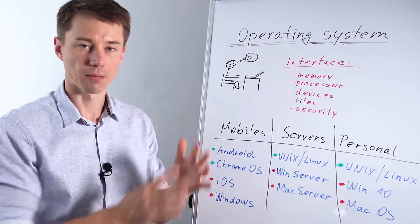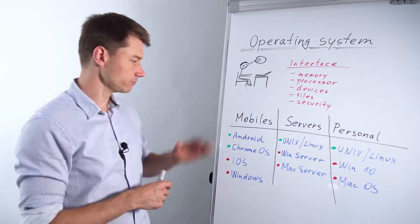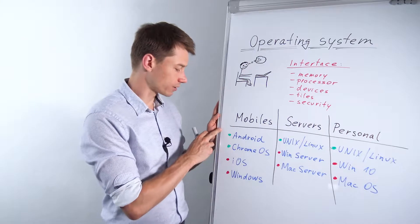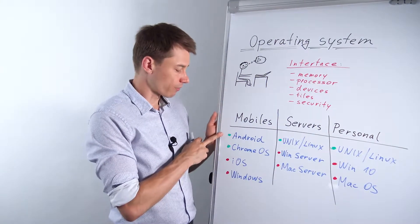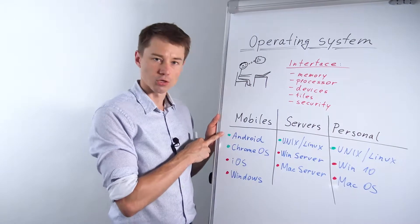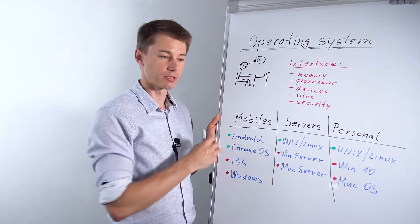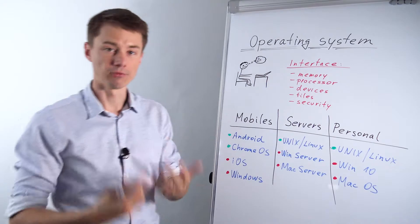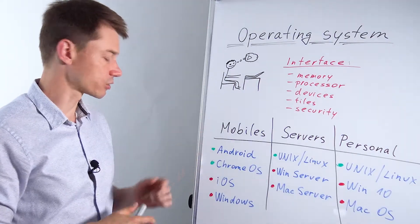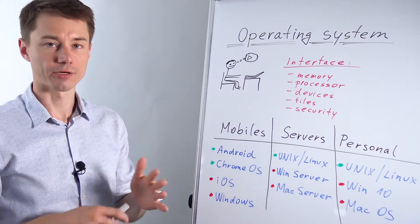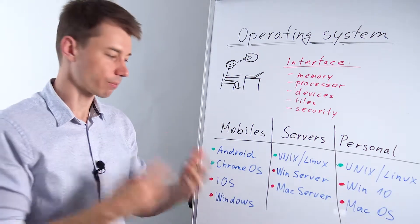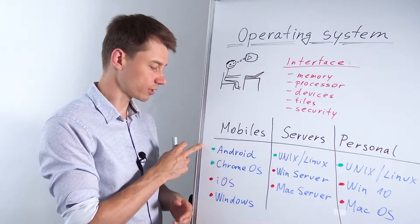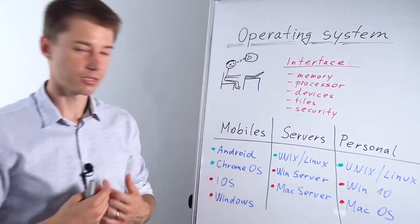First looking at mobile operating systems, obviously you guys know about Android. Android is open source which means the community develops it. It is sponsored by Google to a large extent. They have actually purchased the company that started with Android operating system years ago and then they open sourced it.